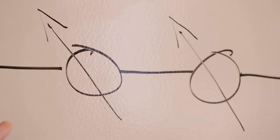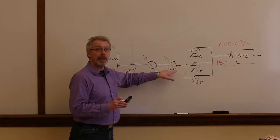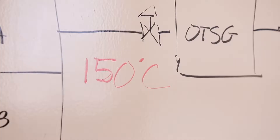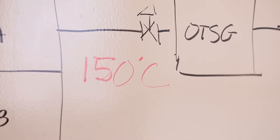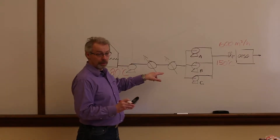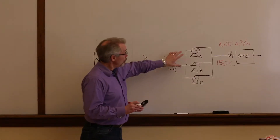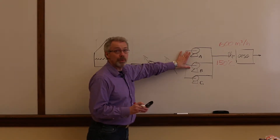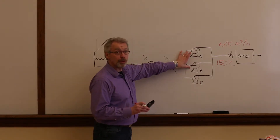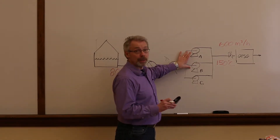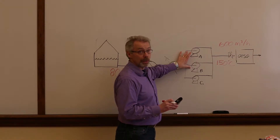Heat from the process is recovered in a set of heat exchangers and increases the water temperature to 150 degrees. Then two of the high pressure boiler feed water pumps raise the pressure to that sufficient to raise steam in the OTSG.